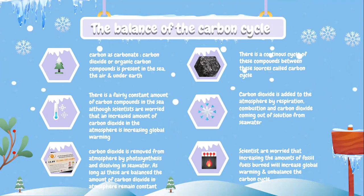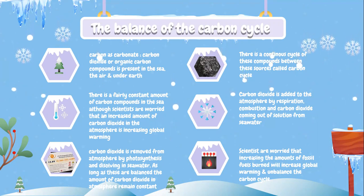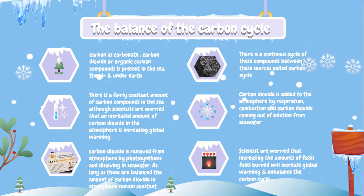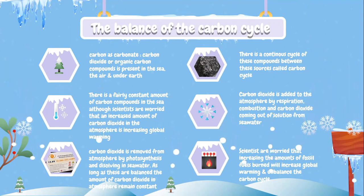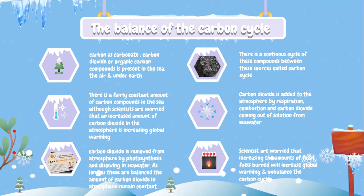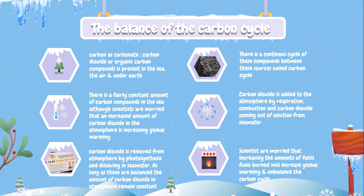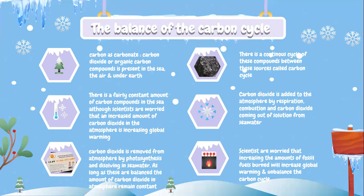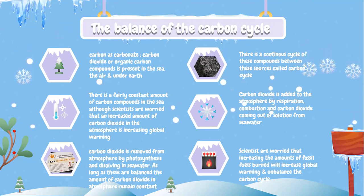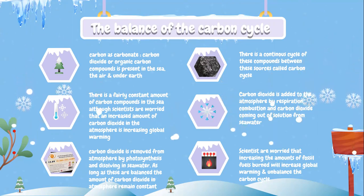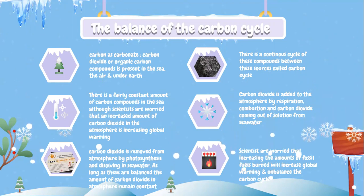There is a fairly constant amount of carbon compounds in the sea, although scientists are worried that an increased amount of carbon dioxide in the atmosphere is increasing global warming. Carbon dioxide is added to the atmosphere by the process of respiration, combustion, and carbon dioxide coming out of solution from seawater. Carbon dioxide is removed from the atmosphere by photosynthesis and dissolving in seawater. As long as these are balanced, the amount of carbon dioxide in the atmosphere remains constant.